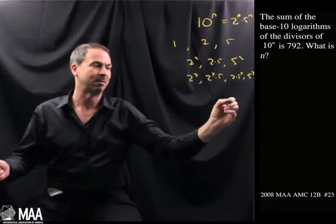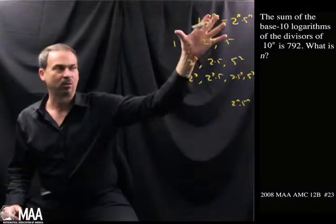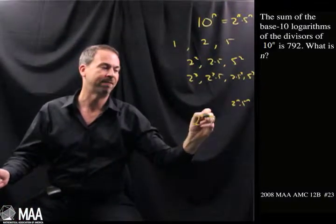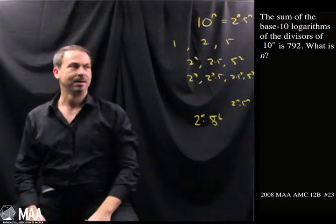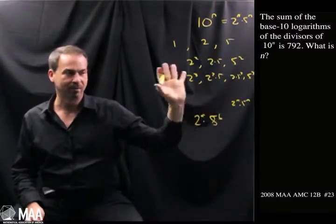It can be systematic, and eventually I'll end up with 2 to the n, 5 to the n. So actually, I know the factors. They all look like this. They look like 2 to the a times 5 to the b. Okay. Factors could do it. It looks a bit messy, looks a bit involved, but at least I know what they are.